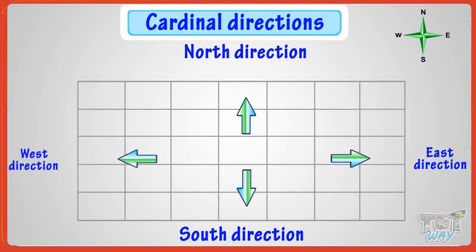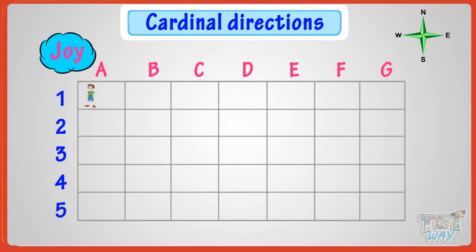Here, Joy is standing at a position. Can you name its position? Joy is standing at row 1 and column A, so he is standing at A1. Now, Joy has to reach the help bottle, which is at position E4, that is in column E and row 4. Now, let's see how Joy can reach position E4.